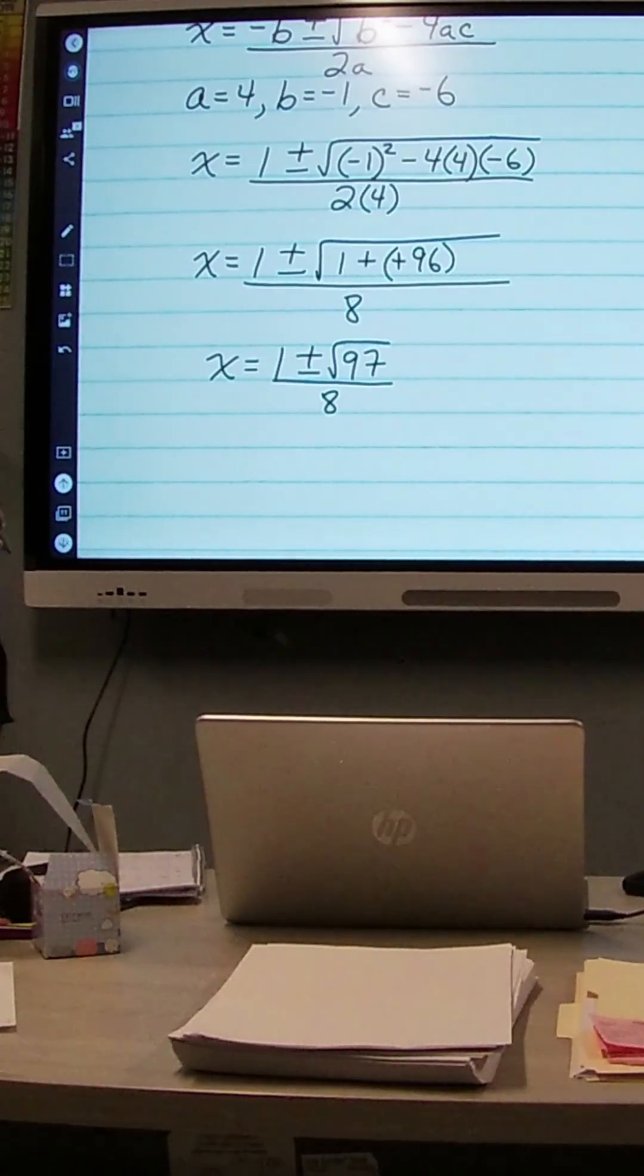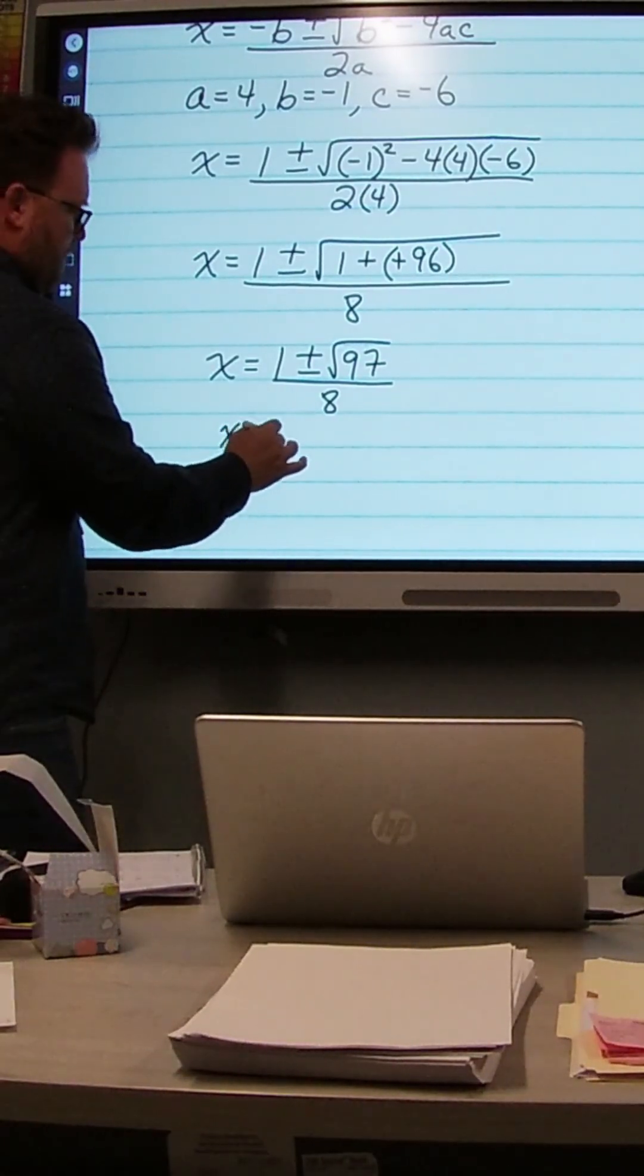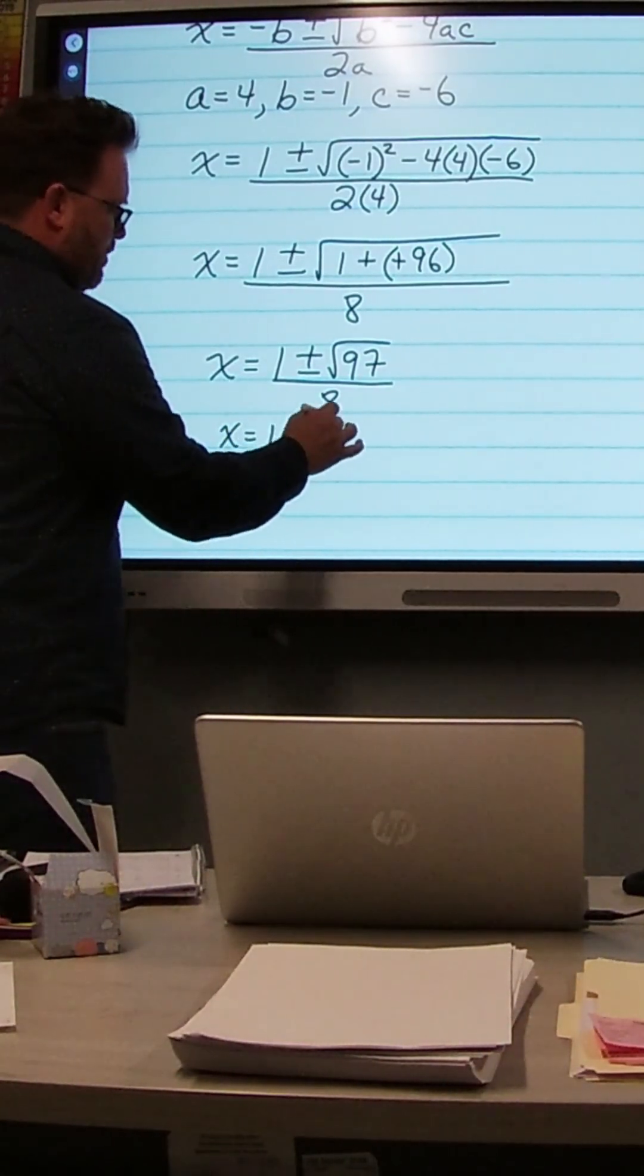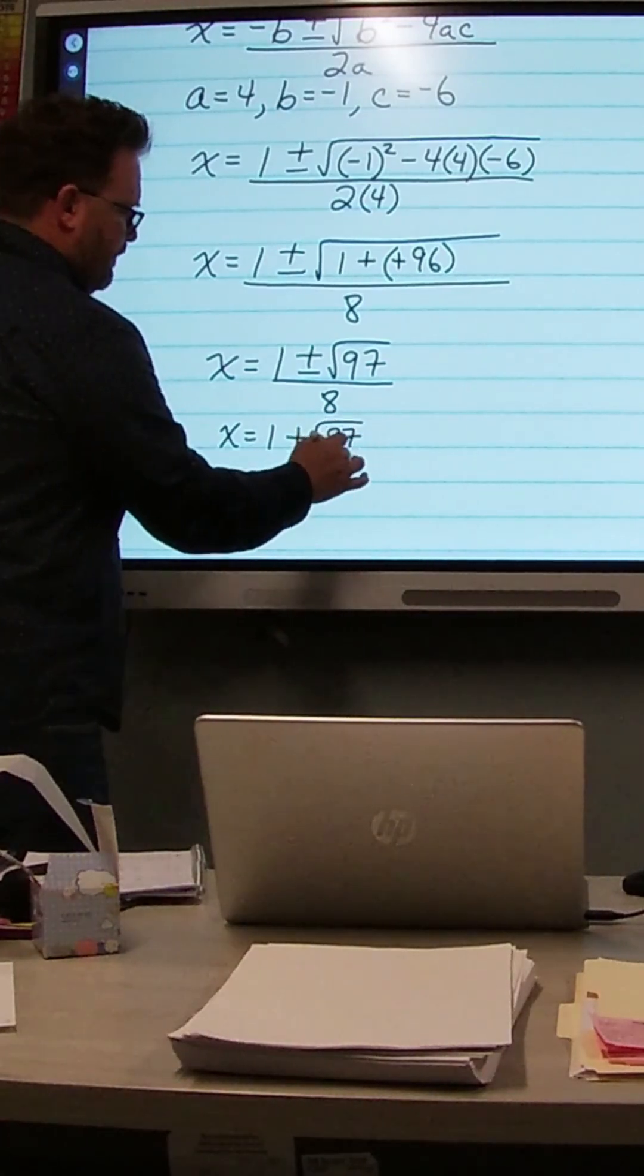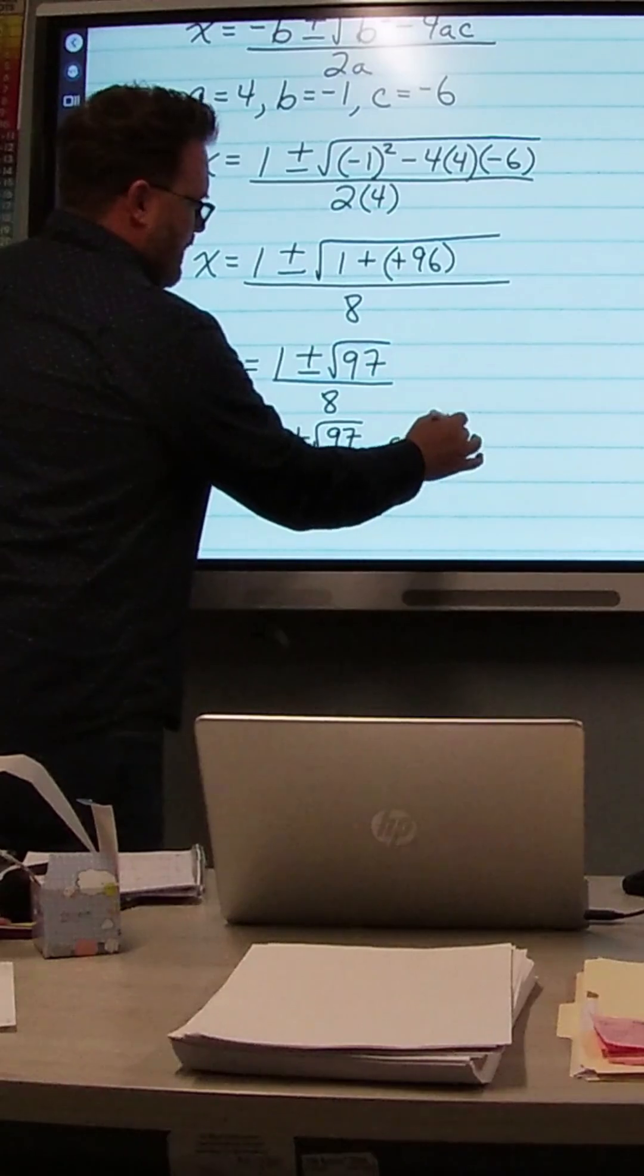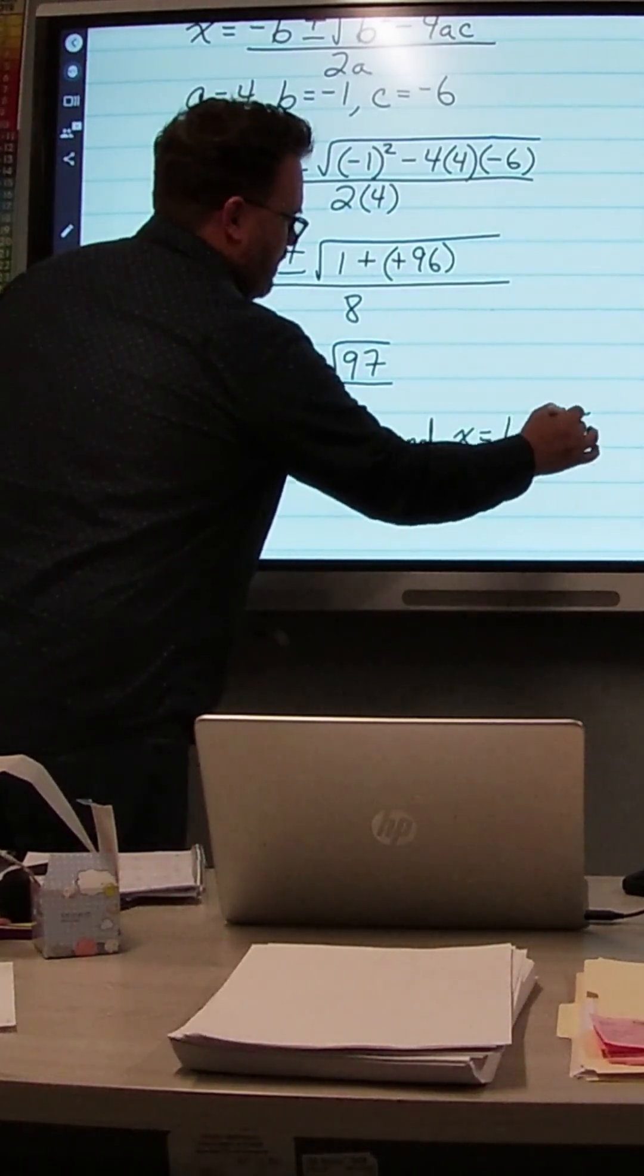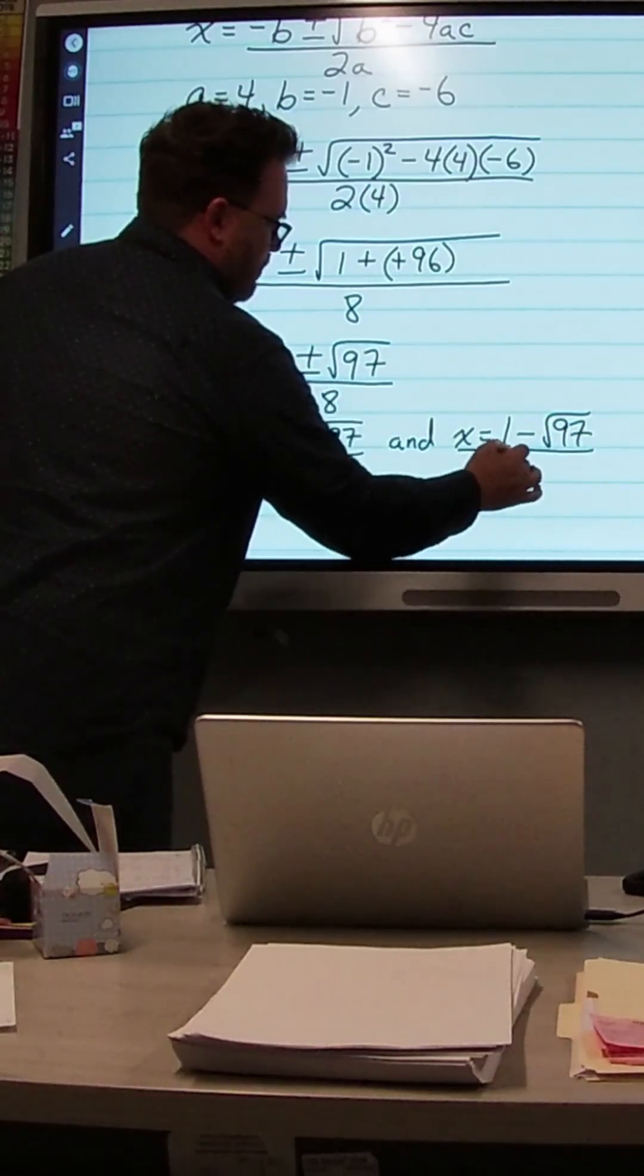I don't think we can break apart 97. So we're just going to leave the two solutions as x equals 1 plus the square root of 97 over 8, and x equals 1 minus the square root of 97 over 8.